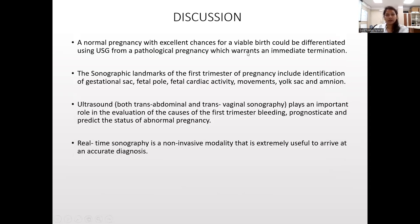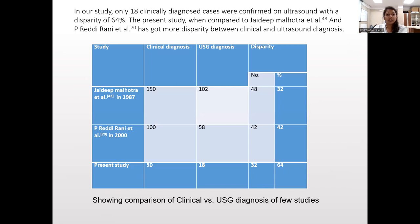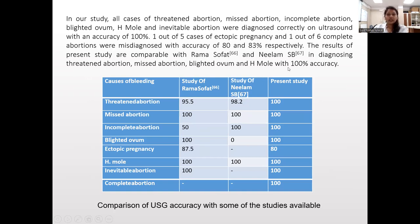Discussion: A normal pregnancy with excellent chances for a viable birth could be differentiated using ultrasound from a pathological pregnancy which warrants immediate termination. The sonographic landmarks for the first trimester include identification of gestational sac, fetal pole, fetal cardiac activity, movements, yolk sac, and amnion. Ultrasound, both TVS and TAS, plays an important role in evaluation of causes of first trimester PV bleeding, to prognosticate and predict the status of abnormal pregnancy. Real-time sonography is a non-invasive modality that is extremely useful to arrive at an accurate diagnosis. In our study, we compared our findings with the Jardip Malhotra study, Reddy Rani study, Ramasopat study, and Neelam study, as described in tabulated form.